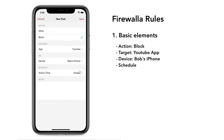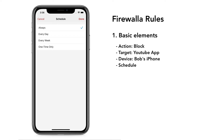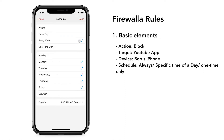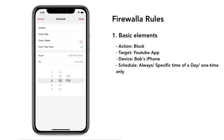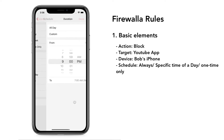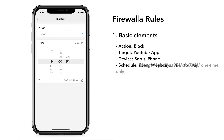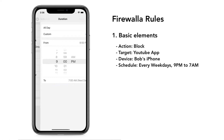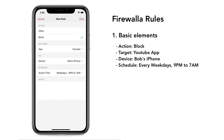Scheduling is useful if you want to run the rule automatically. You can choose between always, a specific time of day, or one time only. In this example, we want the rule to take effect every week, Monday to Friday, from 9 p.m. to 7 a.m. the next day.